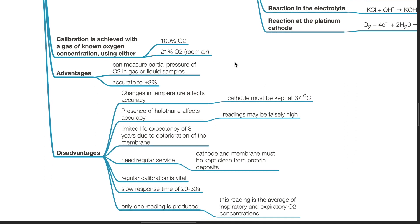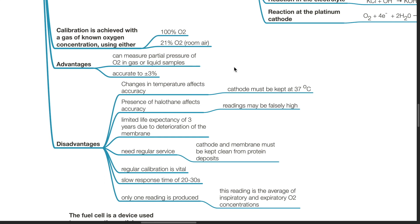Advantages of the Clark electrode: it can measure partial pressures of oxygen in gas or liquid samples, and is accurate to ±3%. Disadvantages: changes in temperature affect its accuracy, and the cathode must be kept at 37 degrees Celsius. The presence of halothane affects accuracy and readings may be falsely high. It has a limited life expectancy of 3 years due to deterioration of the membrane.